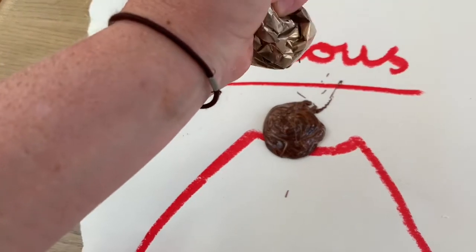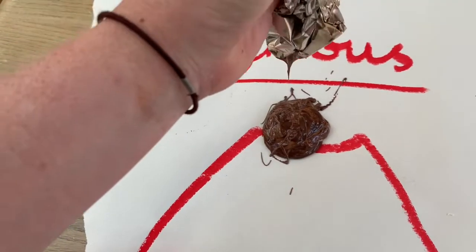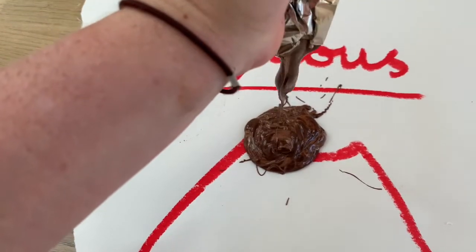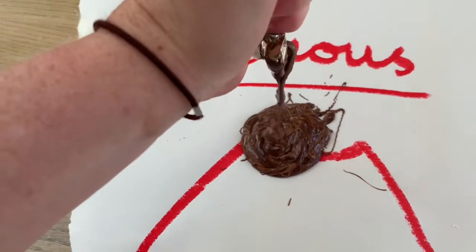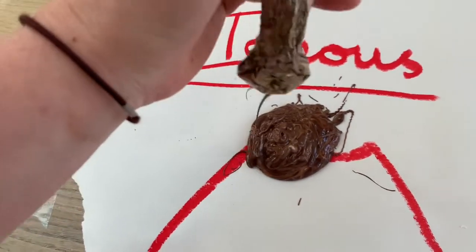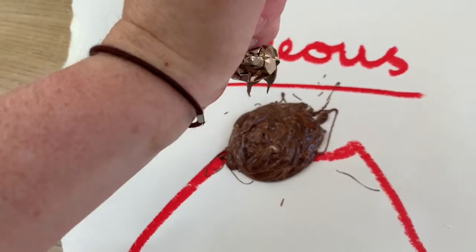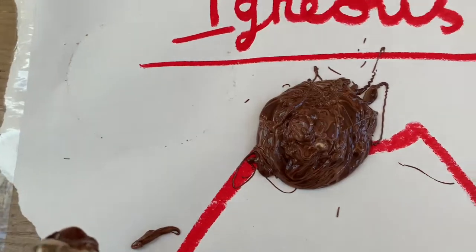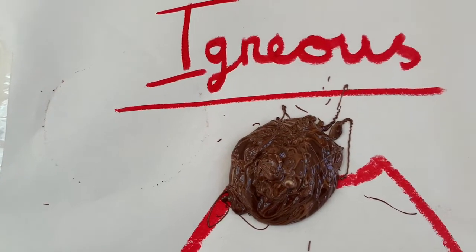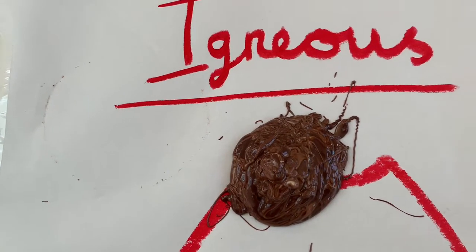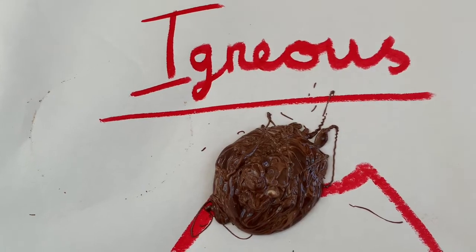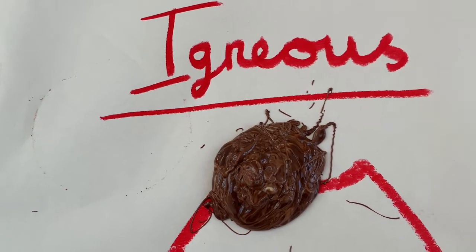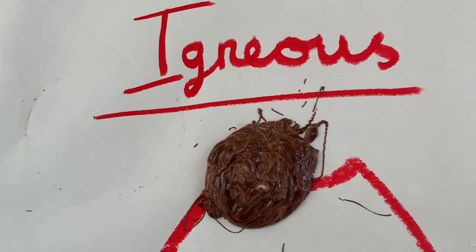Lava is molten rock that has been heated underneath the earth's crust. This molten rock comes to the top of the earth's crust and eventually cools to form igneous rocks. We'll come back to this later and look at it once it's cooled down.